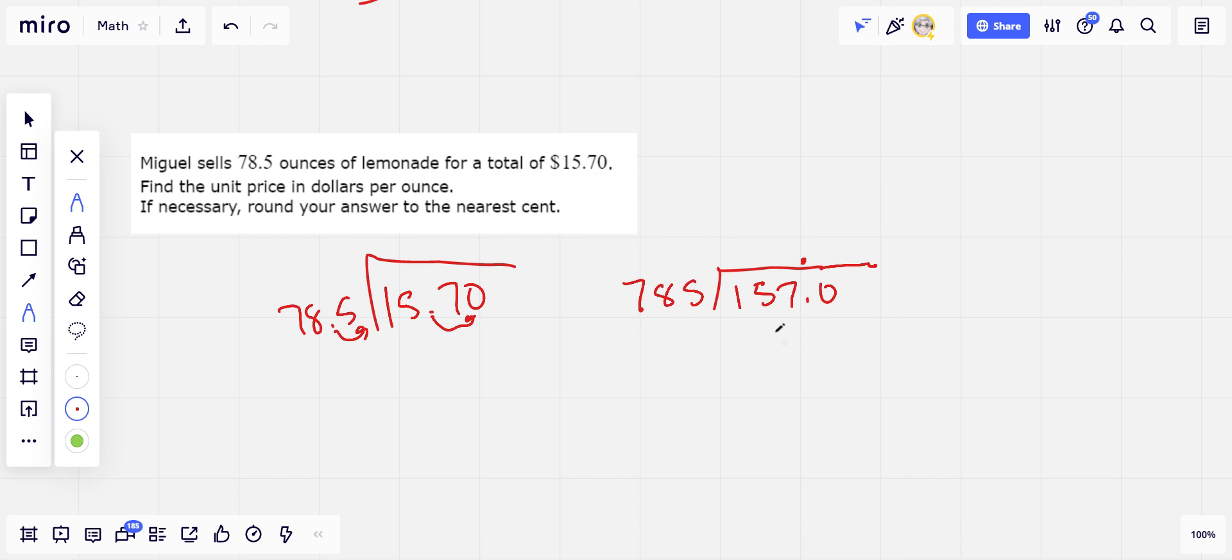So how many 785s? Well, let's see. There's at least one. Maybe there's two. Let's try 2 and see what happens. Two times 5 is 10. Two times 8 is 16, 17. And 2 times 7 is 14, plus 1 is 15. Oh, look at that. So that was actually pretty easy. So we've got 20 cents per ounce.